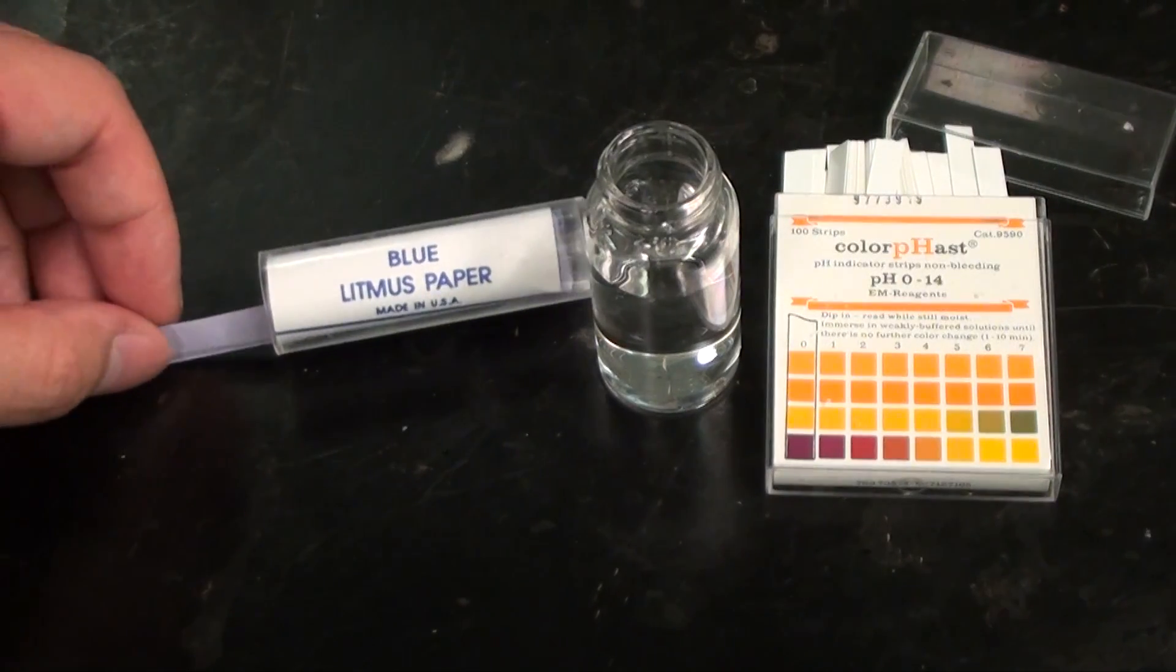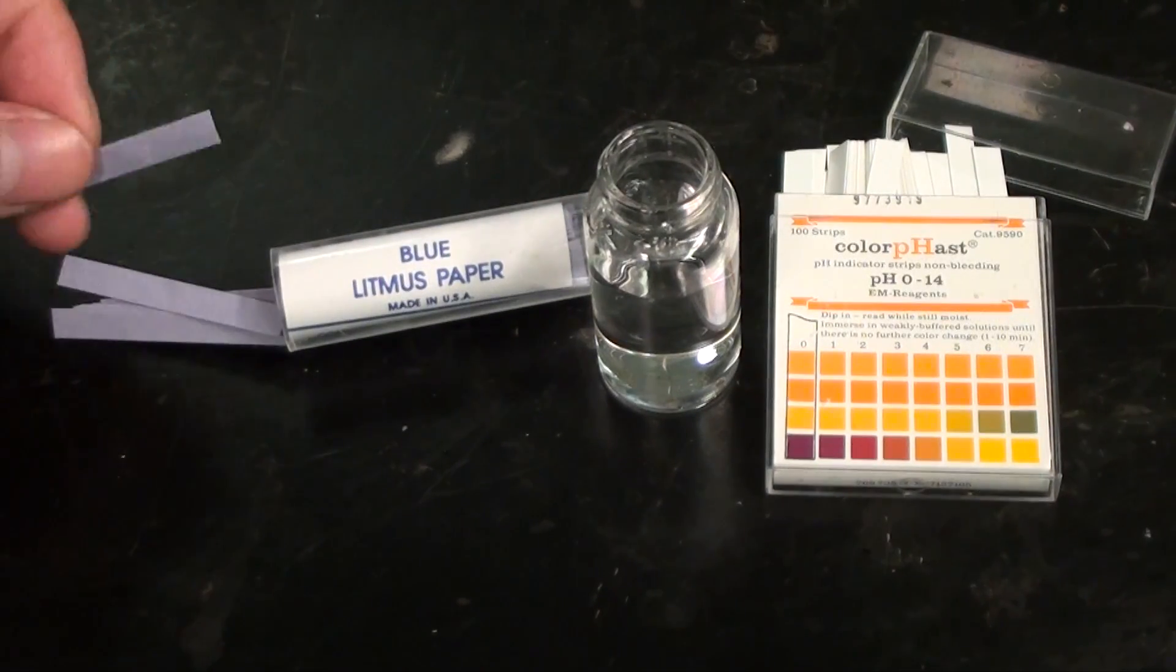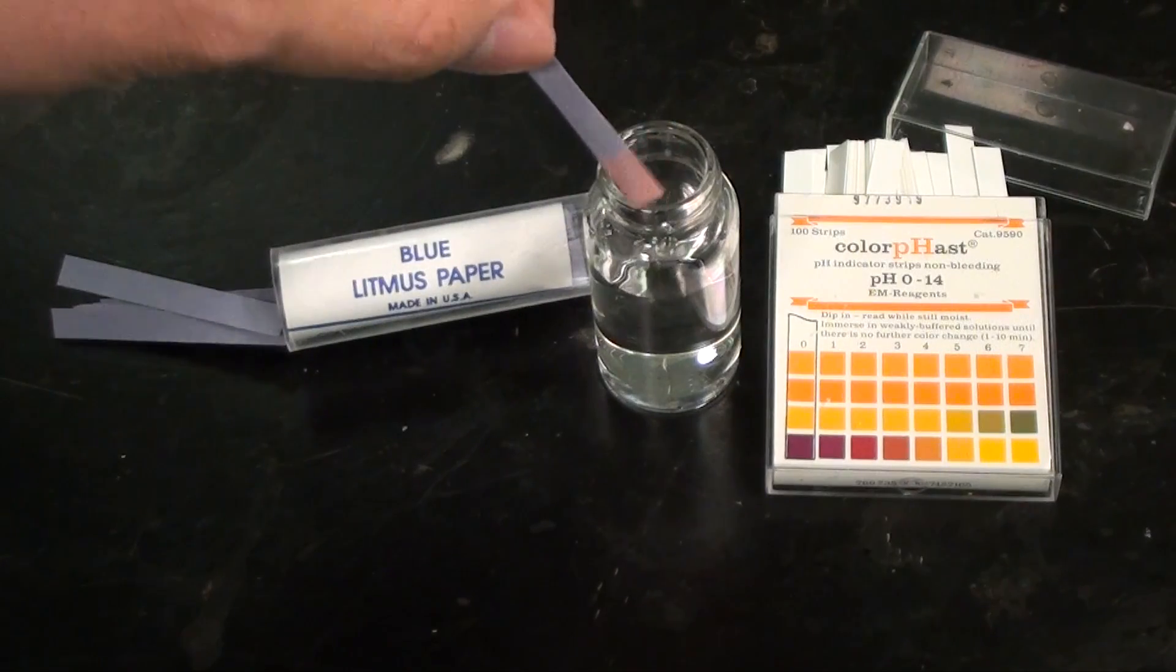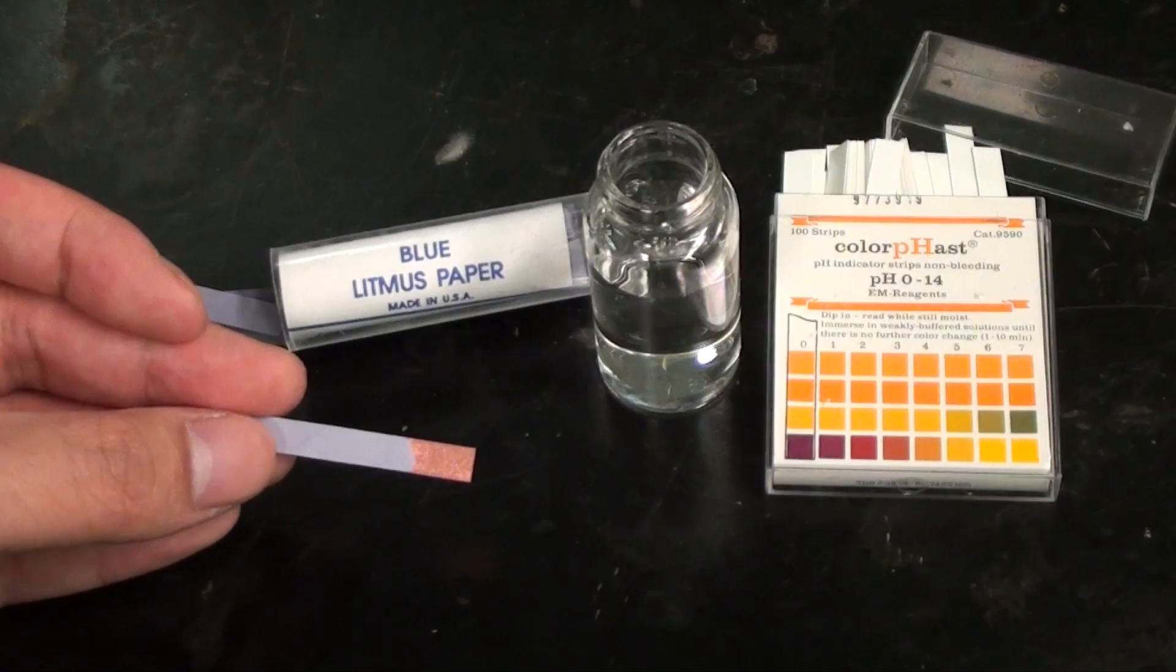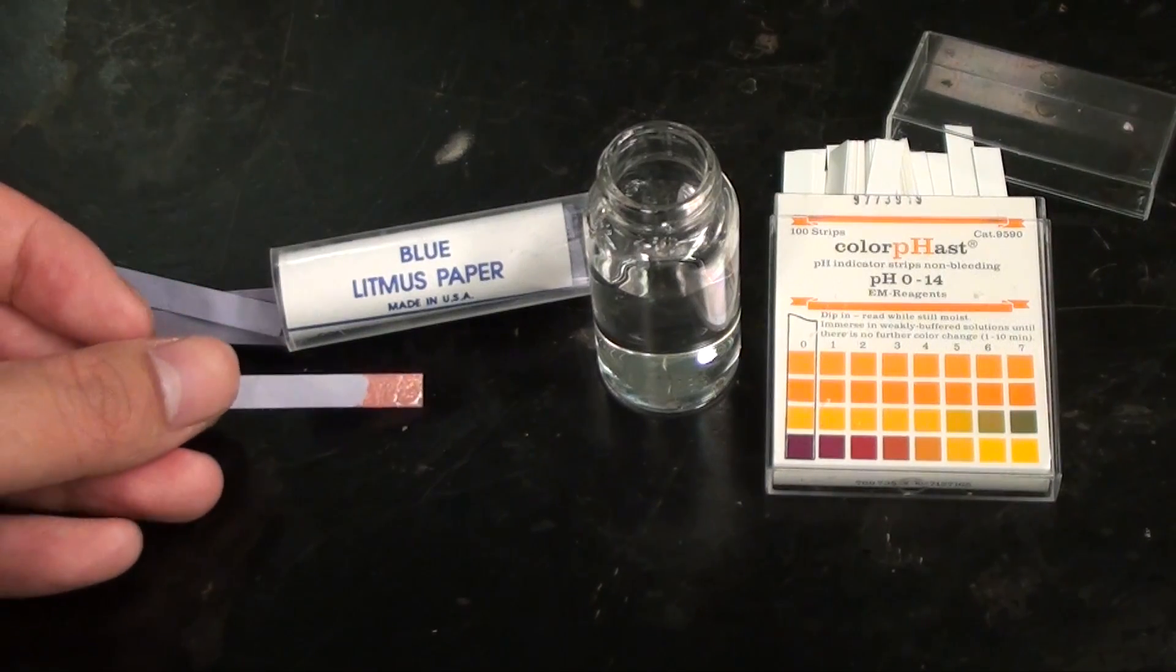On the left here I got blue litmus paper which if dipped into an acidic solution will turn pink or red. Now I don't have it here, but there is also a red litmus paper that turns blue if dipped into basic solutions.